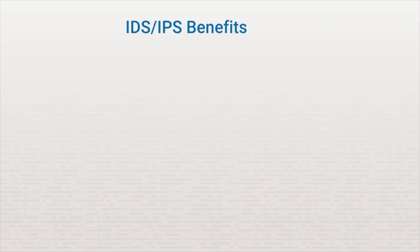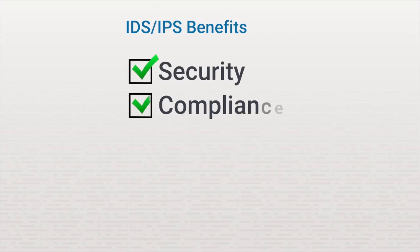Implementing an IDS or IPS can provide several benefits to your organization. In addition to providing increased security, it also helps with compliance. Most organizations are subject to industry, federal, and local regulations. An IDS or IPS can help provide documentation about what's happening on a network in real time and can be used to show that an organization is compliant with all regulations. Information gathered from an IDS can help you determine the frequency, volume, and threat level of attacks that may have targeted your network, which is helpful for risk analysis.